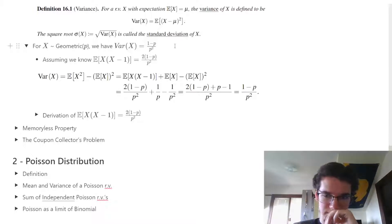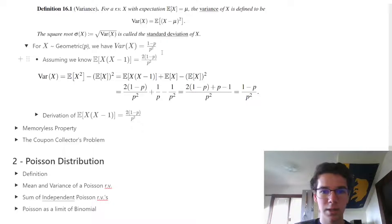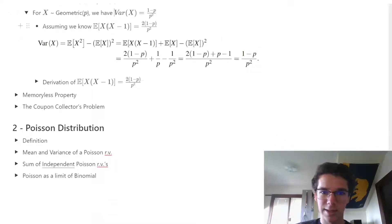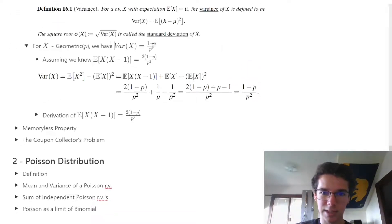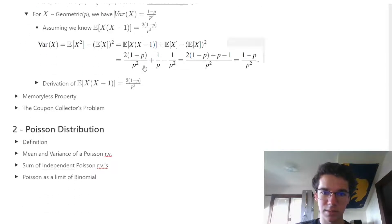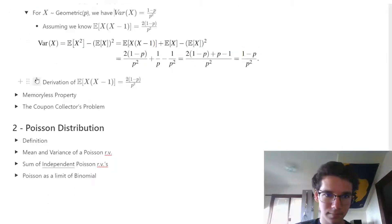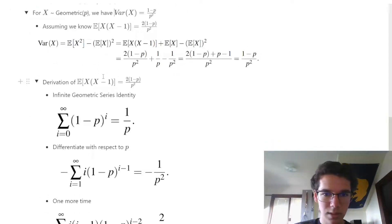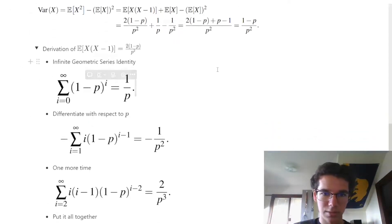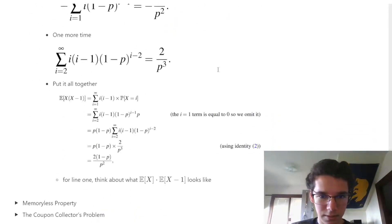Before moving on, we should prove that E[X(X-1)] does in fact equal 2 times (1 minus p) over p squared. We're going to derive that quickly.